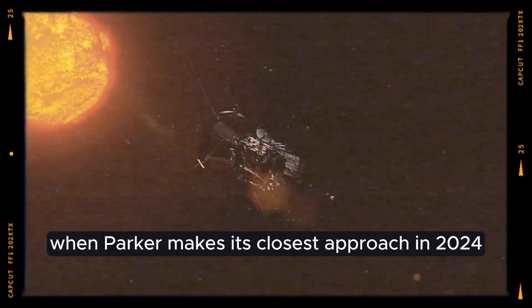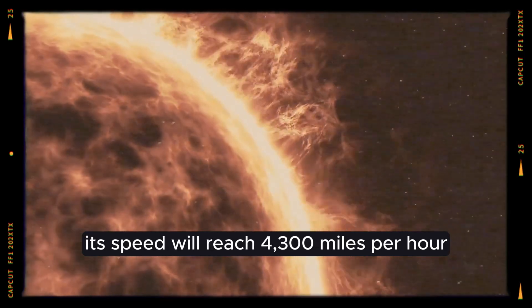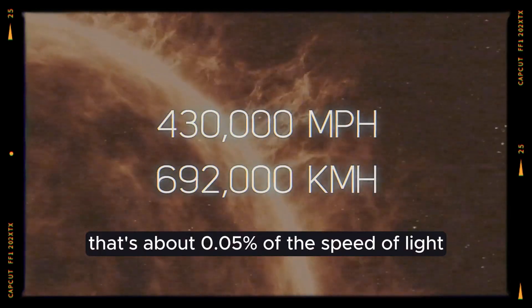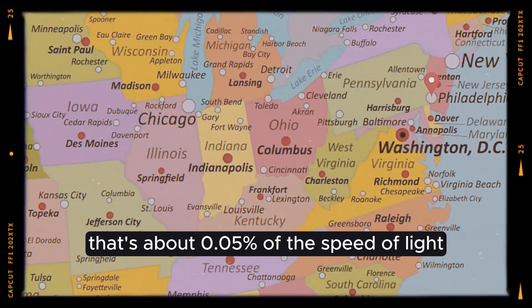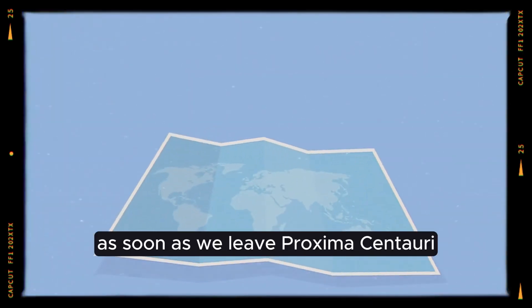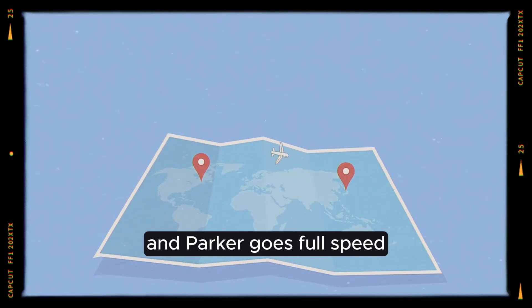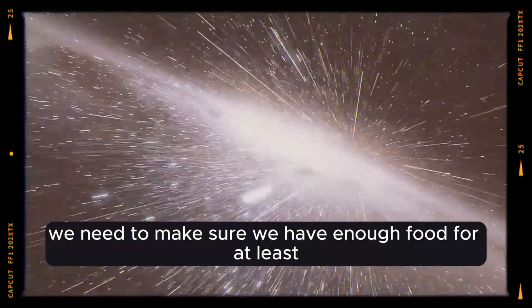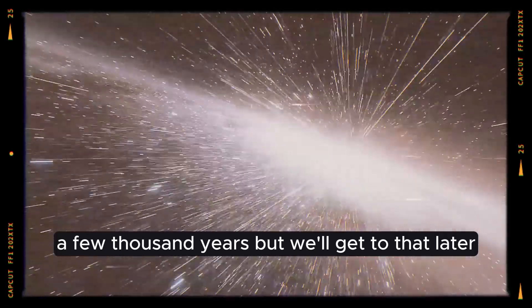When Parker makes its closest approach in 2024, its speed will reach 430,000 miles per hour. That's about 0.05% of the speed of light and it's getting to our closest neighbor in space. As soon as we leave Proxima Centauri and Parker goes full speed, we need to make sure we have enough food for at least a few thousand years. But we'll get to that later.